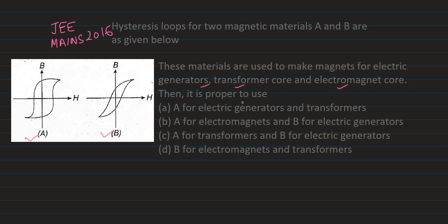Then it is proper to use. So students, here we have not given scale, but comparatively we need to know which graph, which application is most suitable. So if we look here, B graph for a cycle of magnetization or demagnetization, this BH graph area is small. This area is small in comparison to this. This area is large.